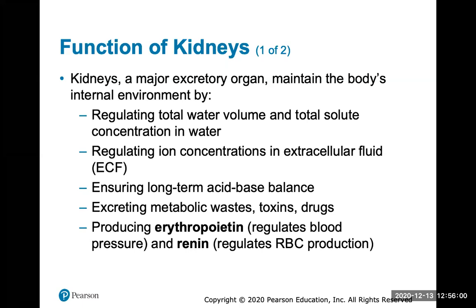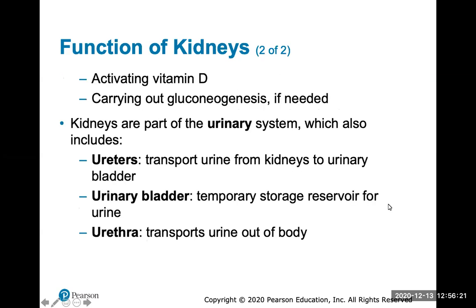The kidney also produces erythropoietin, which regulates red blood cell production, and renin, which regulates blood pressure. Note that erythropoietin and renin should be switched on the slide — erythropoietin is the hormone that creates red blood cells, and renin is the hormone that helps regulate blood pressure.